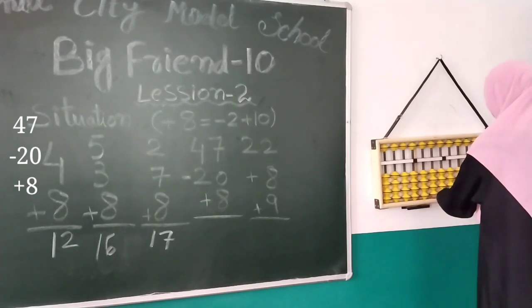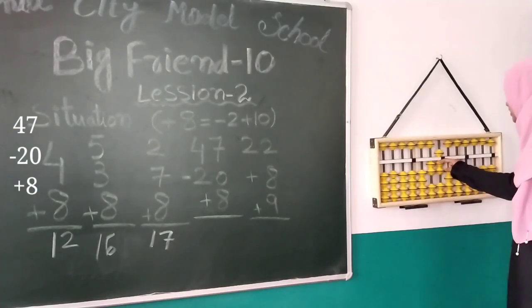Next: 47 minus 20 then plus 8. 47 kaise binaayegi? 4 with index, 7 with pinch, and then minus 20 with index. Again plus 8 karne ke liye minus 2 plus 10. So the answer is 35.